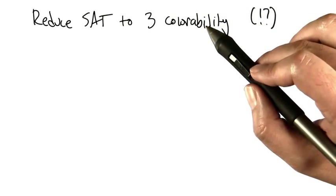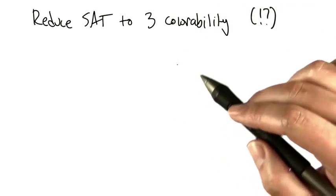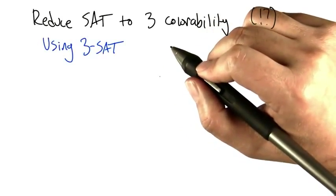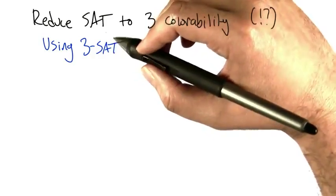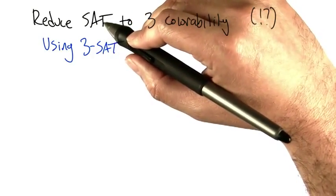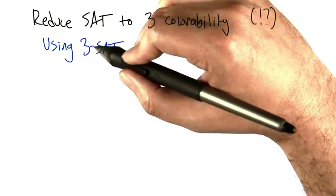And if we can do that, that means a solution to the graph coloring problem will solve satisfiability and therefore anything in NP. Now we're going to take a little bit of a shortcut just so we can get to the punchline fast and we're only going to deal not with the full satisfiability problem which gives any kind of Boolean formula but specifically 3-SAT.